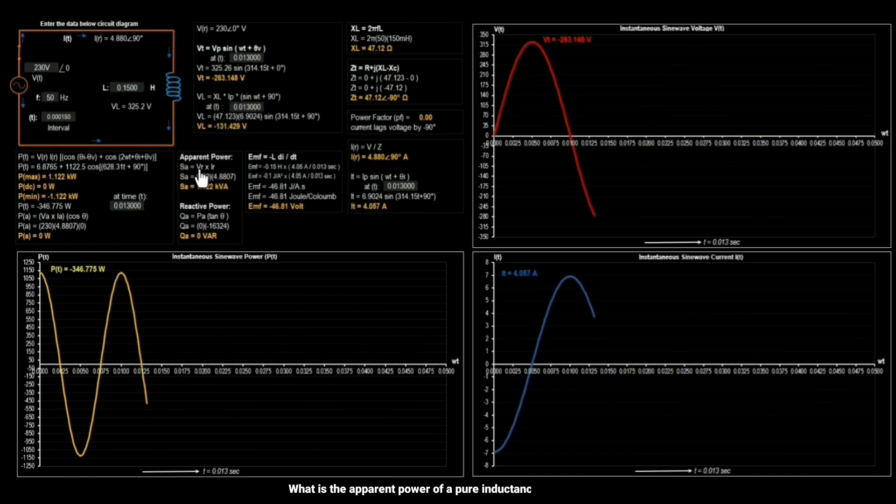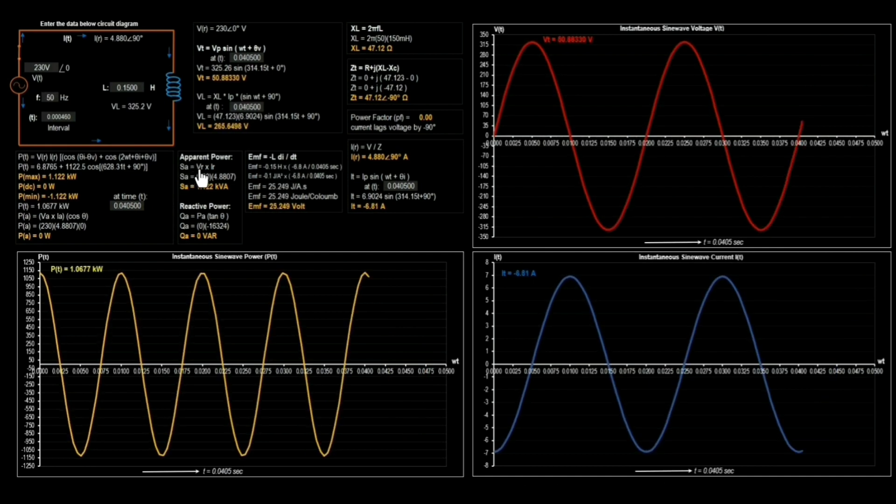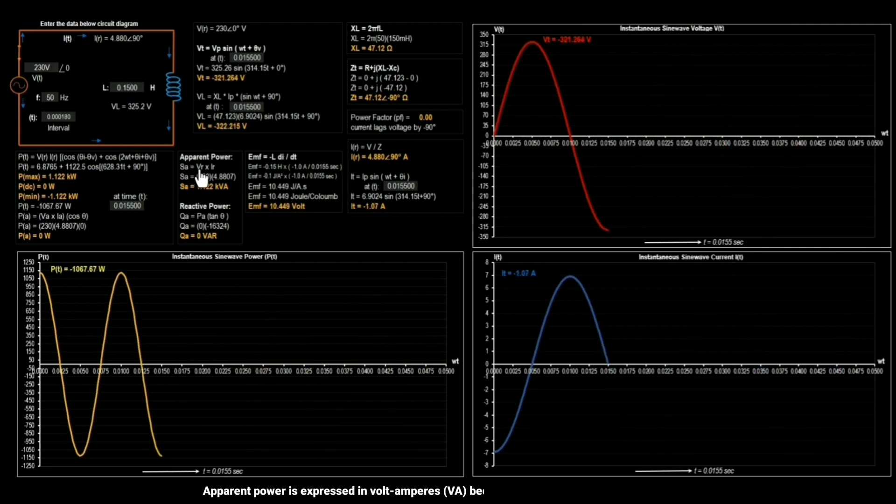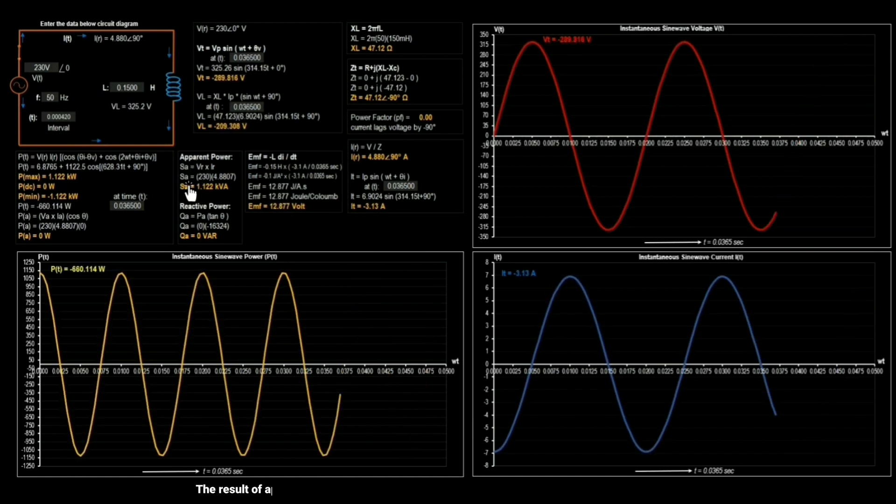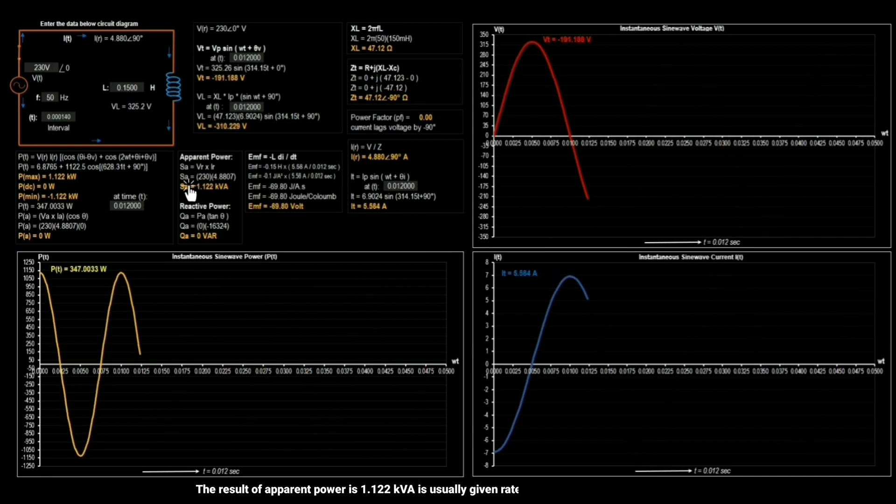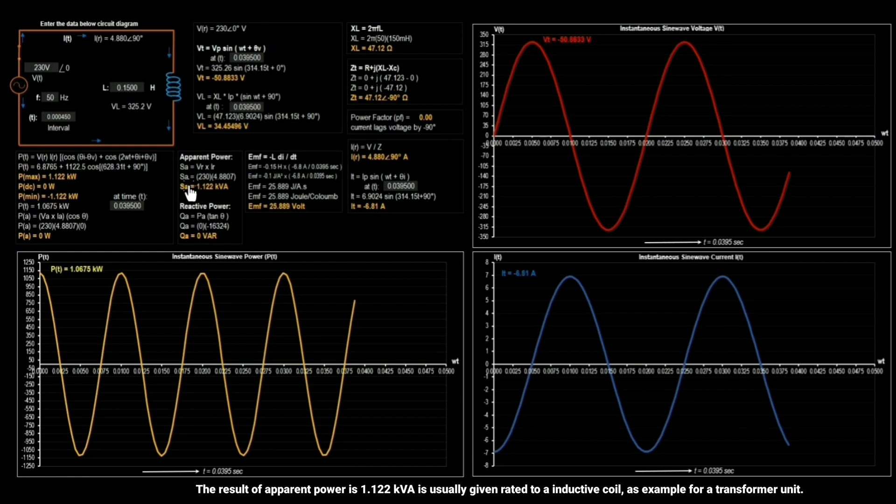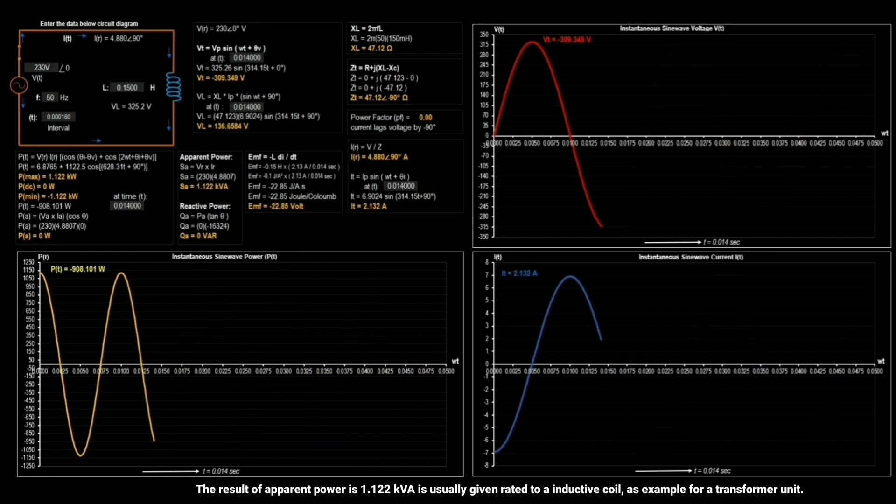What is the apparent power in a pure inductance in electrical AC circuits? Apparent power is expressed in volt amperes because it is the product of RMS voltage and RMS current. The result of apparent power is 1.122 kVA is usually given rated to inductive load, as example for a transformer unit.